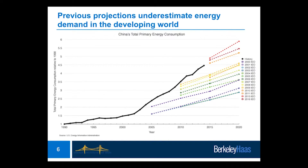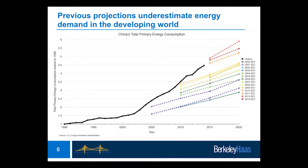The colored lines show what the EIA projected China's energy use would be. The early 2000s projections forecast that by 2010 China's energy use would double relative to 1990. But looking at the black line, China passed that level of consumption around 2003 — six and a half years early. So the EIA had to update their forecast upward, and you see the colored lines continually trying to catch up with China's actual growth. The forecasts are consistently below the actual.